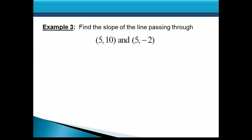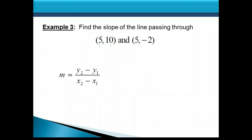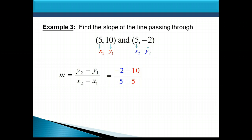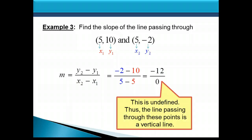Let's find the slope of the line passing through 5, 10 and 5, negative 2. Label the points and plug into the formula: numerator is negative 2 minus 10, and the denominator is 5 minus 5. We end up with negative 12 over 0. Remember, if you have a 0 in the denominator, the fraction is undefined — meaning this line is a vertical line going straight up and down. Remember the guy hanging for dear life on the rope? It's a vertical line.